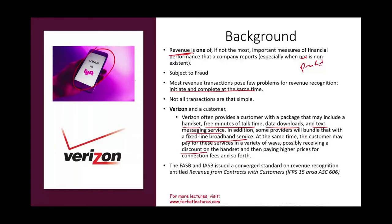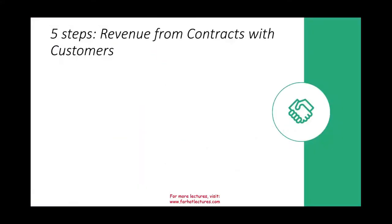FASB and the IASB issued converged standards on revenue recognition entitled 'Revenue from Contracts with Customers.' Before, there were many standards for different industries; now you look at one standard and apply it using principles. Revenue from contracts with customers involves five steps, and we're going to go through each step separately.